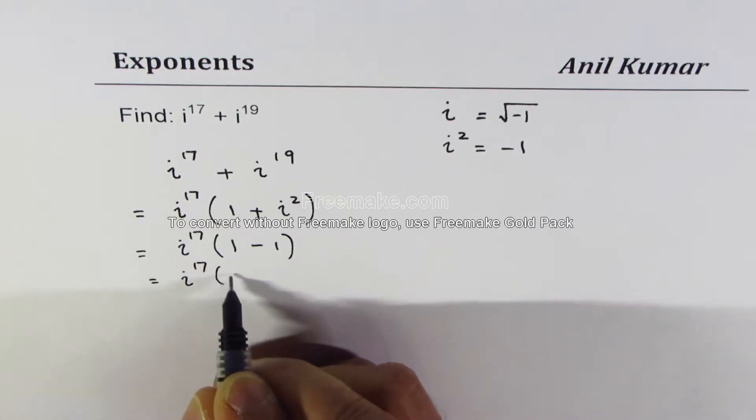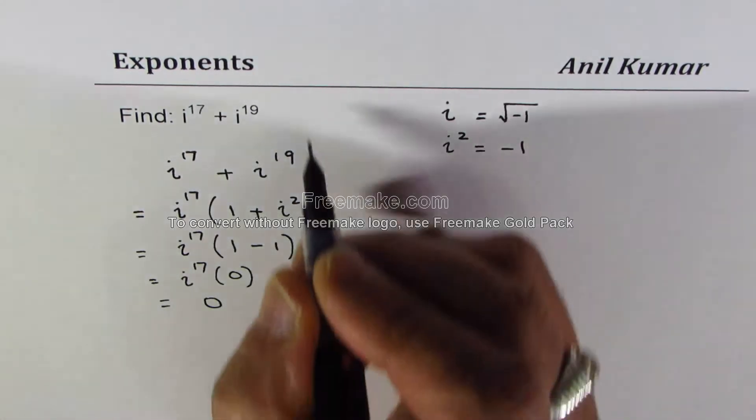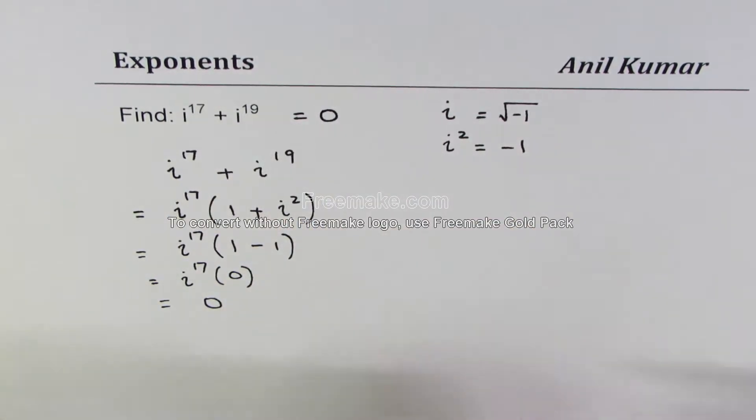i to the power of 17 times 0 should be 0. So what we get this as 0. Now this is one of the methods which could be adopted. There are many different ways you could do it but this is probably the most efficient one.